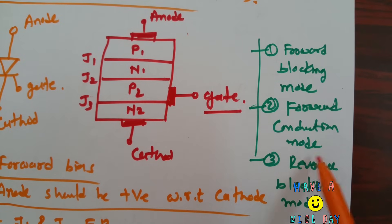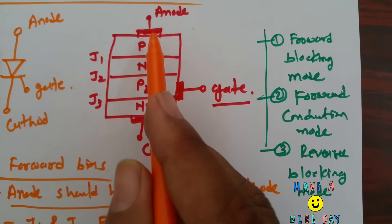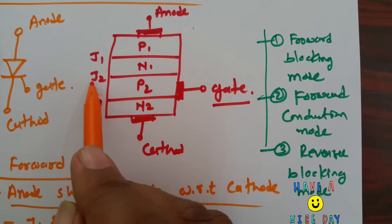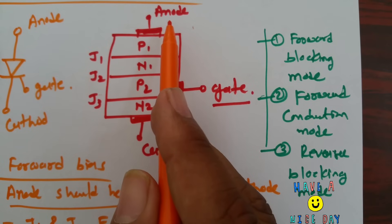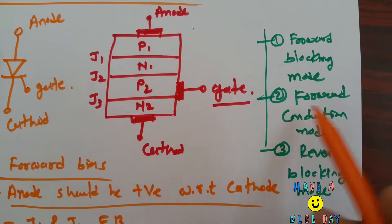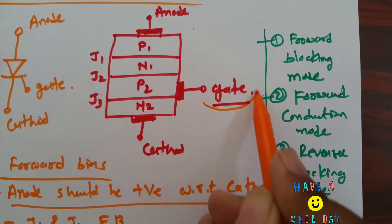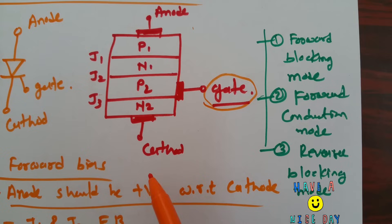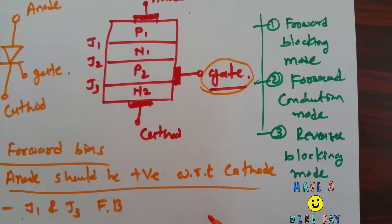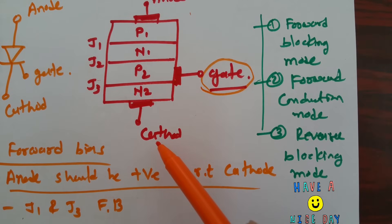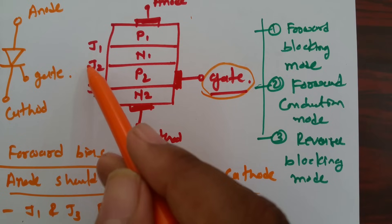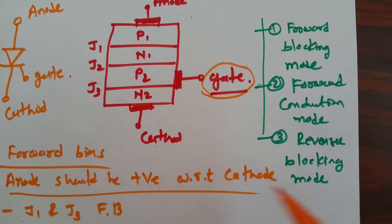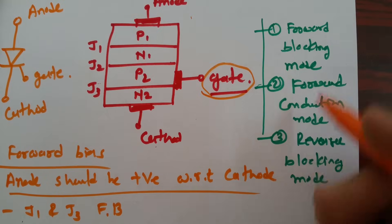In forward conduction mode, SCR is in forward bias with anode positive with respect to cathode, but after breakdown of J2 junction, a high amount of current will flow through anode to cathode. That forward conduction can be controlled by gate current — as we increase gate current, forward triggering of SCR will happen earlier. In reverse bias, J1 and J3 are in reverse bias causing very minor current flow, which is called reverse blocking mode.